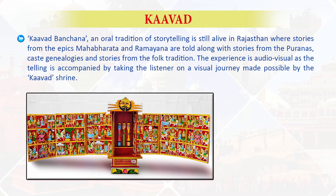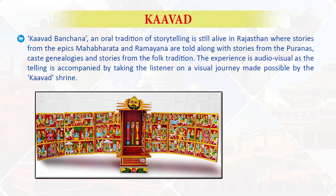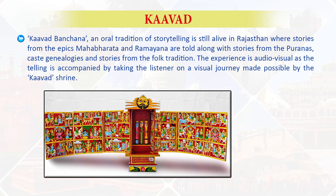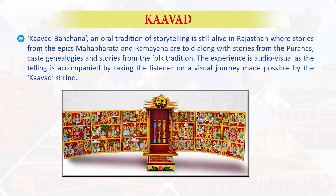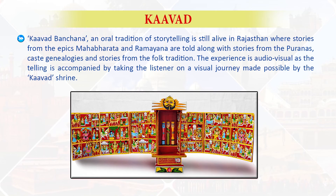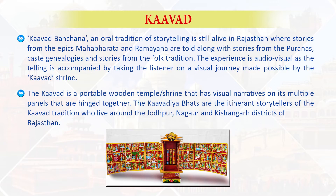Kavad Bachana is an oral tradition of storytelling still alive in Rajasthan where stories from the epics Mahabharata and Ramayana are told, along with stories from the Puranas, caste genealogies and stories from the folk tradition. The telling is accompanied by a visual journey made possible by the Kavad shrine — a portable wooden temple shrine that has visual narratives on its multiple hinged panels. The Kavadiyas or Bhat are the itinerant storytellers of the Kavad tradition who live around the Jodhpur, Nagaur and Kishangarh districts of Rajasthan.